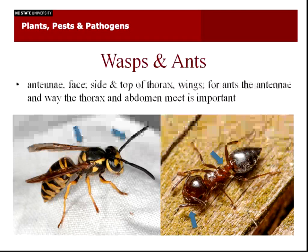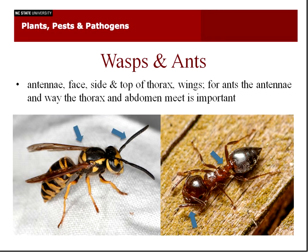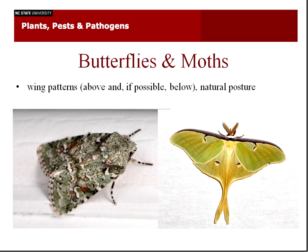For wasps and ants, you're going to want to take pictures of the antennae, the face, the top of the thorax, and wings. For ants, the antennae are important and how the thorax meets the abdomen. For butterflies and moths, the best thing to do if possible is to take a live photo of the actual organism sitting there, because their natural stance and coloration when alive are very important. Once they're dead, they curl up and lose their scales, making them more difficult to identify.